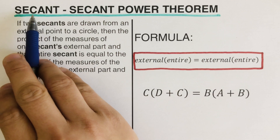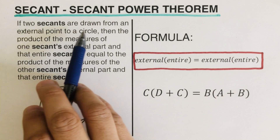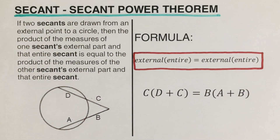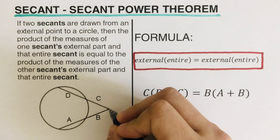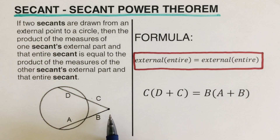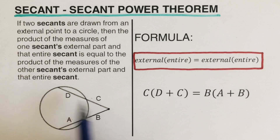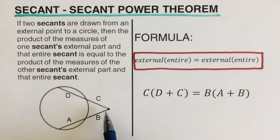By definition, this theorem states that if two secants are drawn from an external point to a circle — the external point we have here is this point right here, located on the outside of the circle — then the product of the measures of one secant's external part and the entire secant is equal to the product of the other secant's external part and the entire secant.